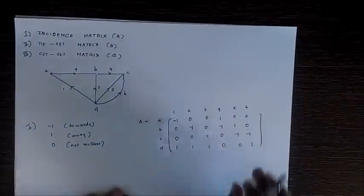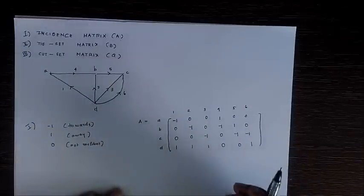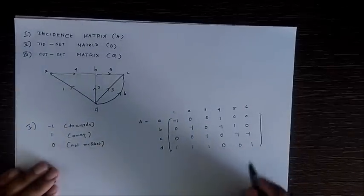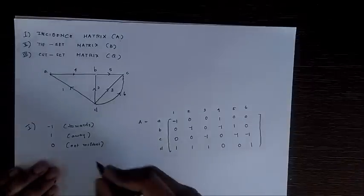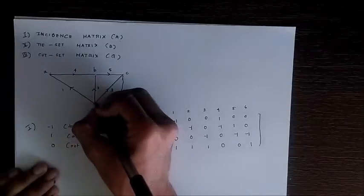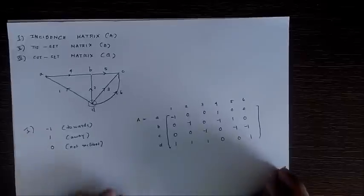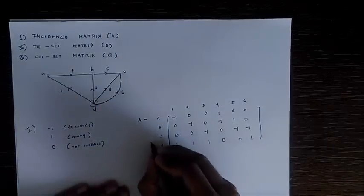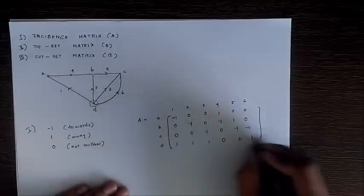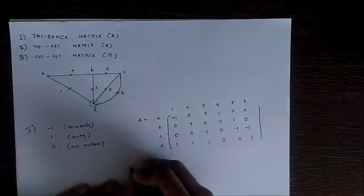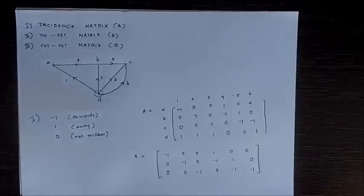For solving problems we normally write the reduced incidence matrix, which we find by considering any one node as the reference node. Here node D is the most convenient reference node, so we just eliminate the row obtained by node D to obtain the reduced incidence matrix. This is the reduced incidence matrix of this graph.